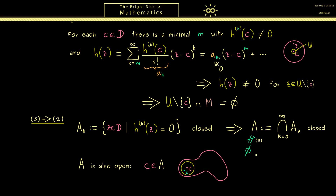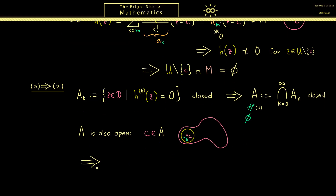Now we have a set A that is open and closed at the same time. Indeed this can happen, but because d is a connected domain, this is only possible if A is the empty set or the whole domain. So in our case A has to be d. Indeed this is something we can easily show if we assume that d is path connected. I want to skip some details here and just give the general idea of the proof. So now we have shown that A is equal to d, which means that h can only be the zero function — which is exactly our statement 2.